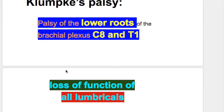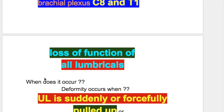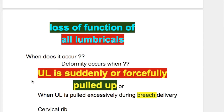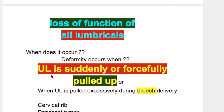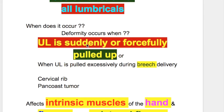In Klumpke's palsy, there is loss of function of all lumbricals. The deformity occurs when the upper limb is suddenly or forcefully pulled up, or when the upper limb is pulled excessively during breech delivery.